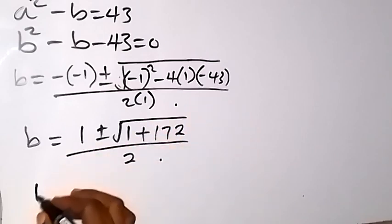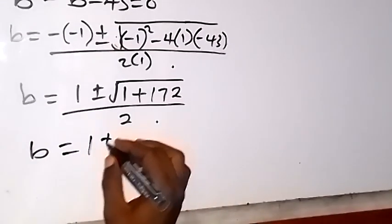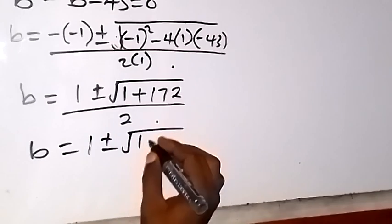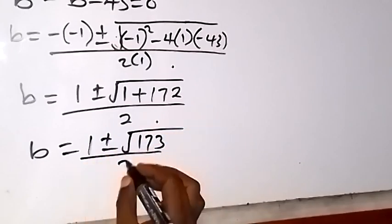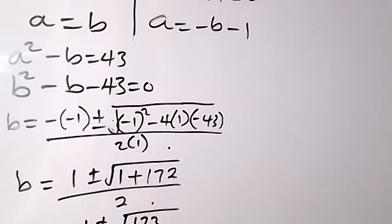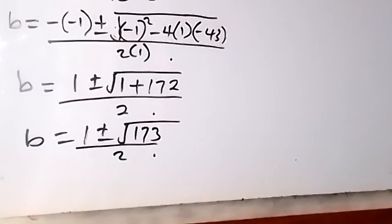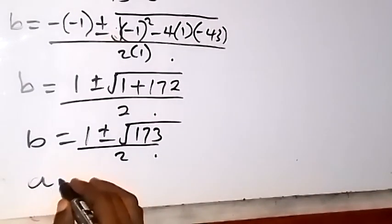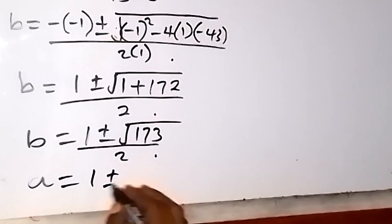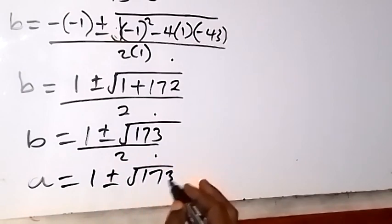Therefore, b equals 1 plus or minus square root of 173, all over 2. And since a equals b in this case, a also equals 1 plus or minus square root of 173, all over 2.